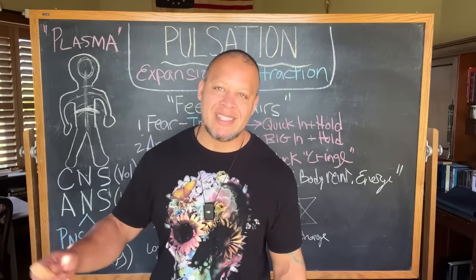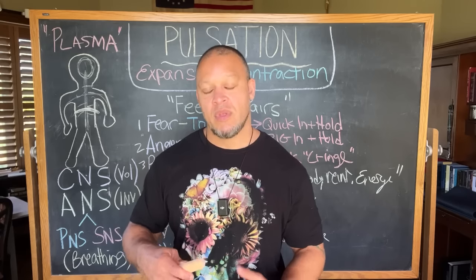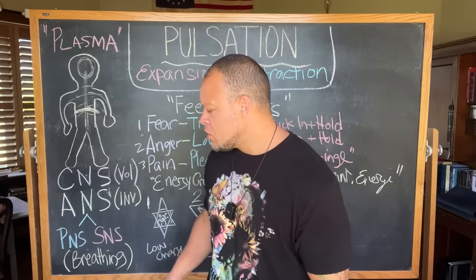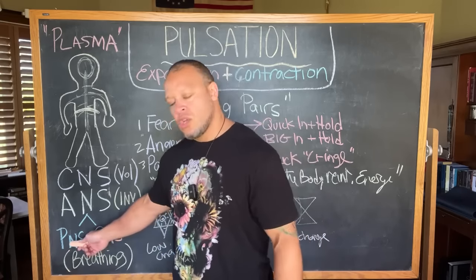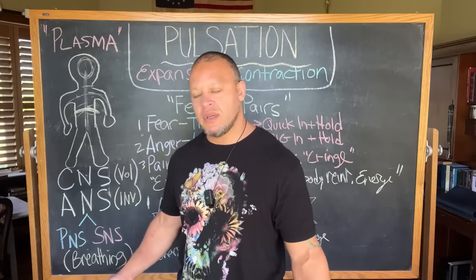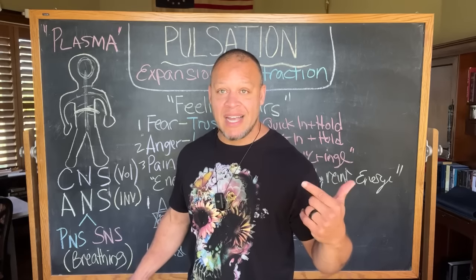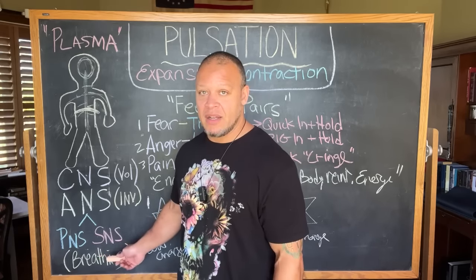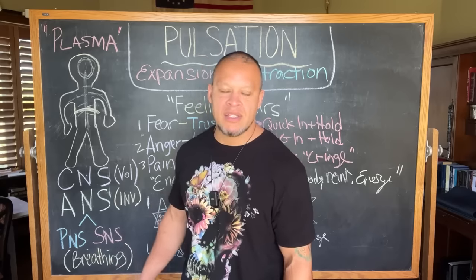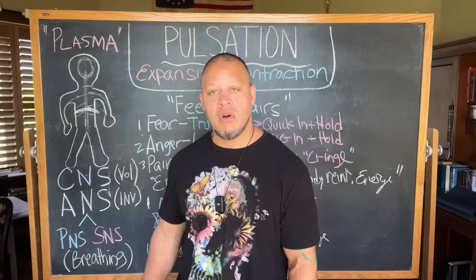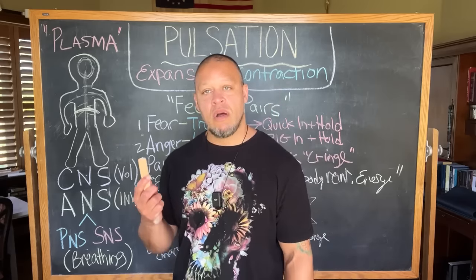Parasympathetic is rest and digest — when you're relaxed. Sympathetic is when you're stressed. For example, when you're relaxed and aroused, a boner comes easy. When you're not relaxed, you can't do it — you're under sympathetic stress. Now, if you know you're under stress, maybe you take a hot shower, drink some chamomile tea, lay down and do some breathing exercises — next thing you know, you're in parasympathetic and the boner comes home. We have some control over that.